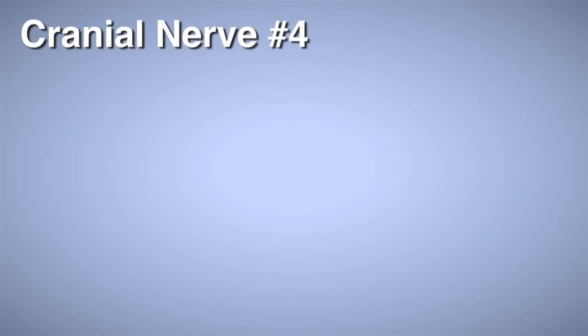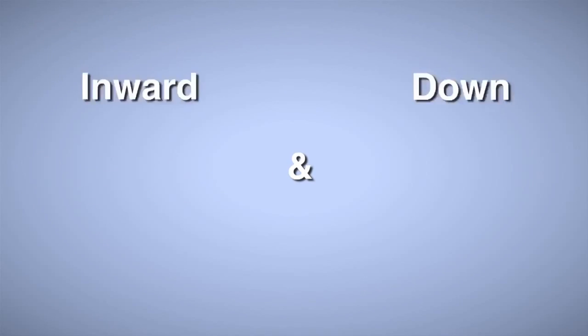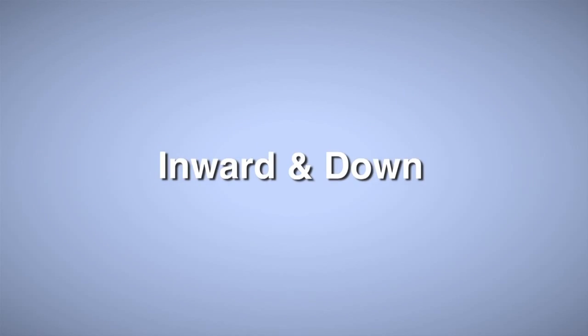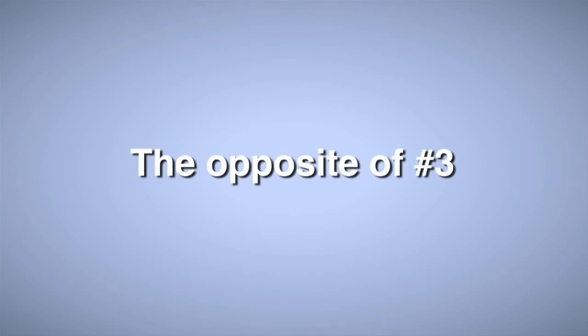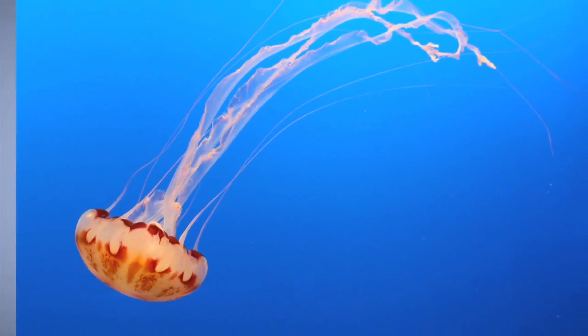Number 4 is trochlear. Your eyes go inward and down, so it's the opposite of 3. The easy way to remember this is a jellyfish goes down between your eyes.